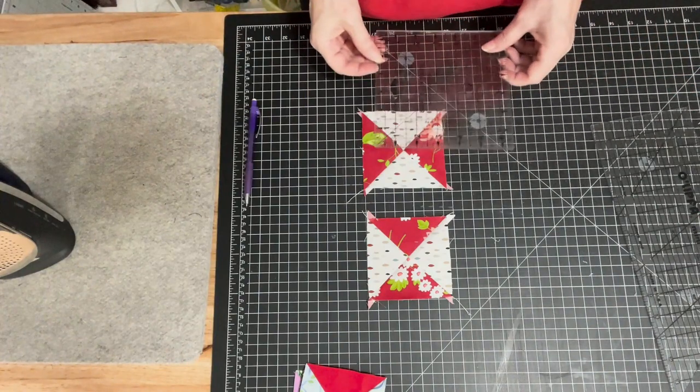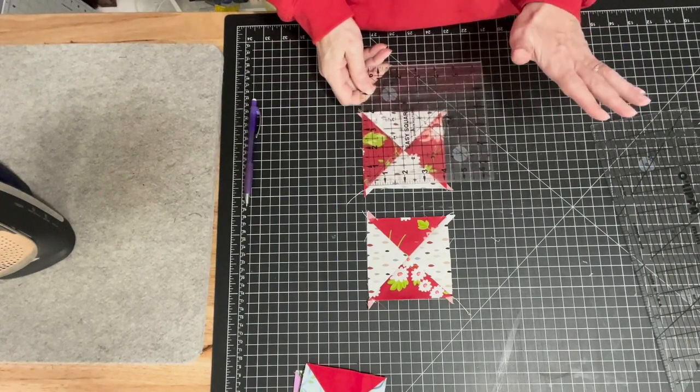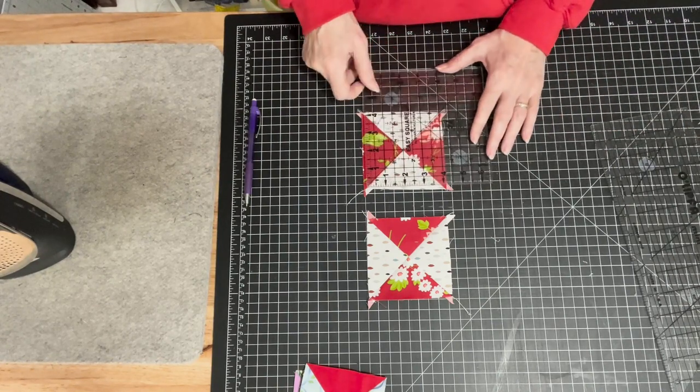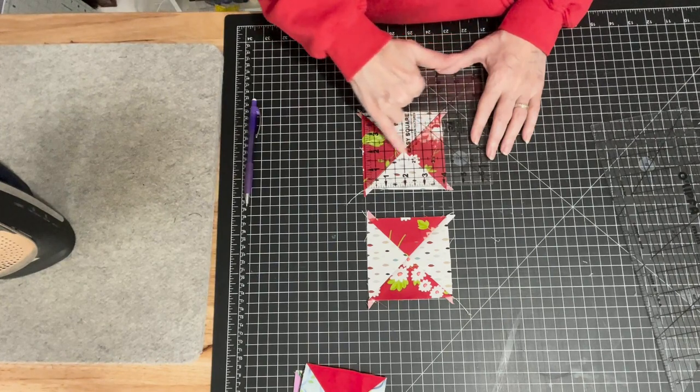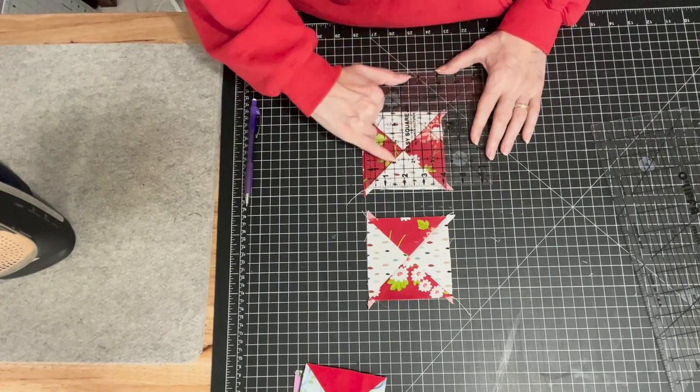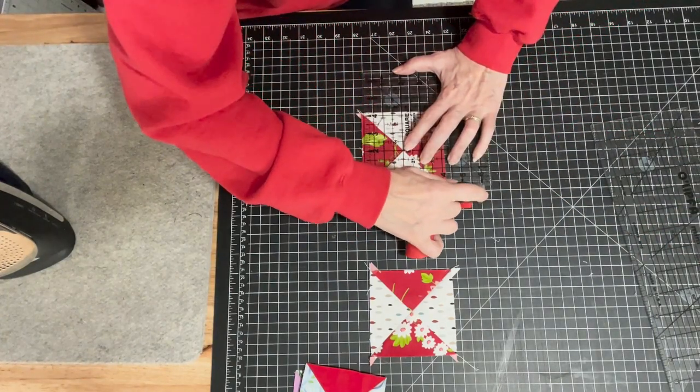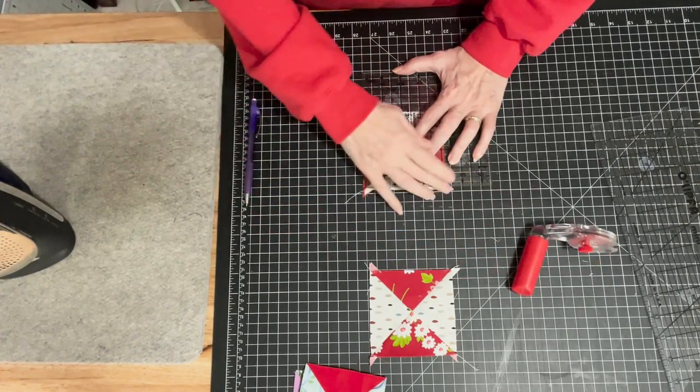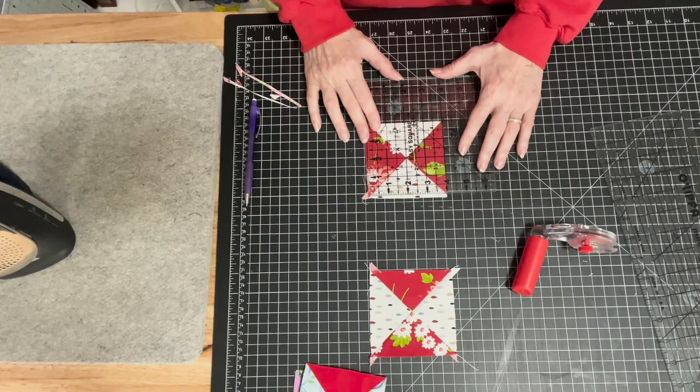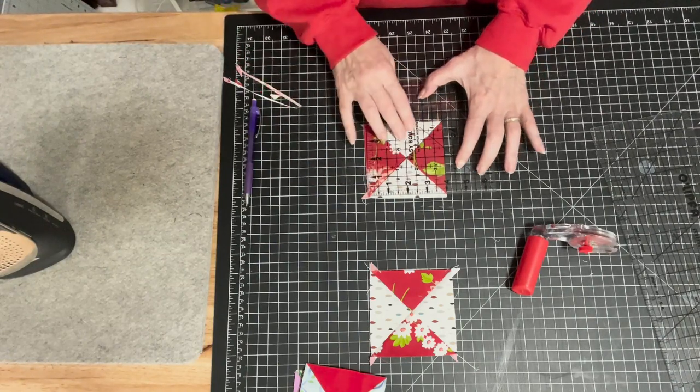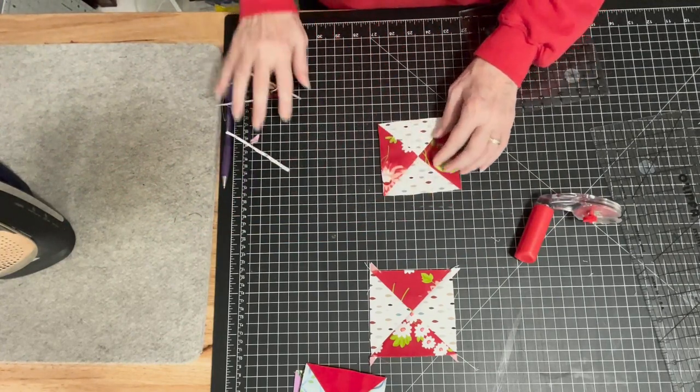Now I have two cute little hourglass blocks and I'm going to square these up. That'll get rid of these dog ears on the corners. I'm going to take my ruler - I know I want them to be four inches, so my two-inch line is going to go right down the center. It's going to meet where my two-inch line here and my two-inch line here crisscross the center. My 45-degree line on my ruler is going to go right up that seam. Then when I cut this on the top and the side, I can flip it over and do the same thing - my two-inch lines crisscross in the middle and my 45-degree diagonal line goes right up that seam.